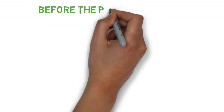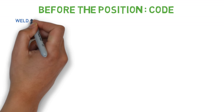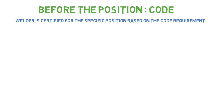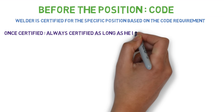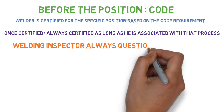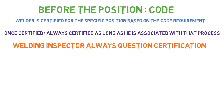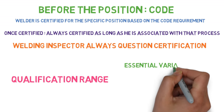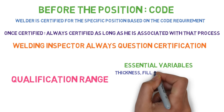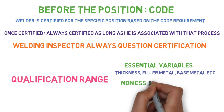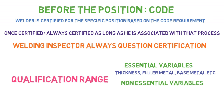Before understanding about the welding position, the role and importance of codes like AWS, ASME, and ISO is very important to understand. A welder is certified under a specific code and once certified, he is always certified — unless the welding inspector has any question about his work or his ability. Once the welder gets certification, he gets that certification under a specific range called the qualification range. That qualification range has some essential variables like thickness, filler metal, base metal, or non-essential variables like current and cleaning technique, and based on that, he can perform his work.